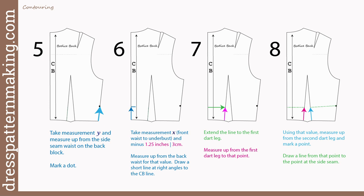So for the back — as I said previously, the empire line is lower in the back at the center back than it is at the center front. But first, we'll match the placement of the empire line at the side seams because the front and back must match at the side seams. Looking at number five: mark the side seam the same as the front — take measurement Y and measure up from the waist and mark a point. Number six: take measurement X (a reminder — measurement X was from the center front waist to the underbust line), then minus one and a quarter inches or three centimeters. Measure up from the center back waist for that value and draw a short line at right angles to the center back line. Number seven: extend that line to the first dart leg and measure it from the waist up to that line. Number eight: measure up on the second dart leg for the same value as the first dart leg, mark a point, and then draw a line from that point to the side seam.